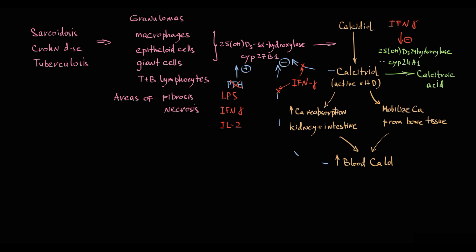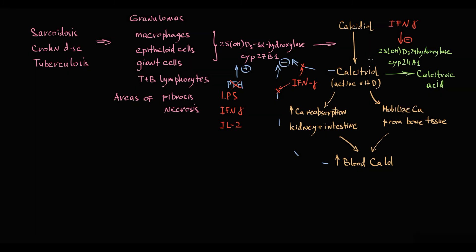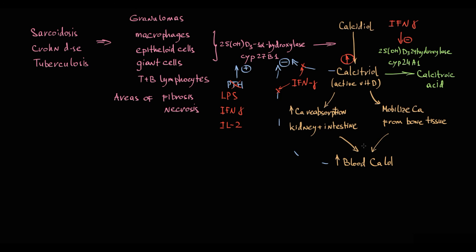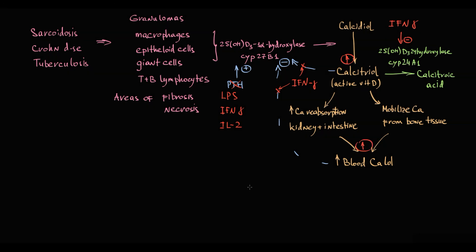Together, these effects result in increasing blood calcitriol level that causes proportional increase in blood calcium level. Also, the more severe the inflammation, the higher is pro-inflammatory cytokine secretion, the more substantial becomes hypercalcemia. That's why hypercalcemia is a characteristic feature of granulomatous diseases.